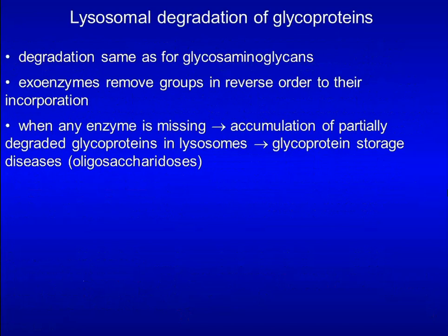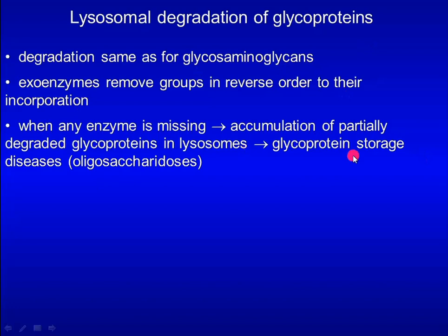Degradation of oligosaccharides from glycoproteins follows a pathway similar to that for degradation of glycosaminoglycans. Exoenzymes remove groups in reverse order of their incorporation. When any enzyme is missing, it causes accumulation of partially degraded glycoproteins in lysosomes, leading to glycoprotein storage diseases or oligosaccharidoses.